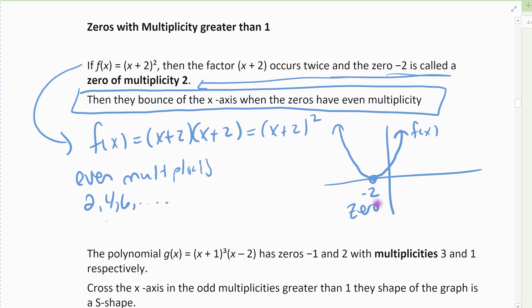At that zero, it doesn't cross. It bounces off the x-axis when we have even multiplicity, and that's true for any. So if it was (x + 2)^4, it would be true. (x + 2)^10, it would be true. It would bounce off. It would just touch it there and bounce off. It doesn't cross.